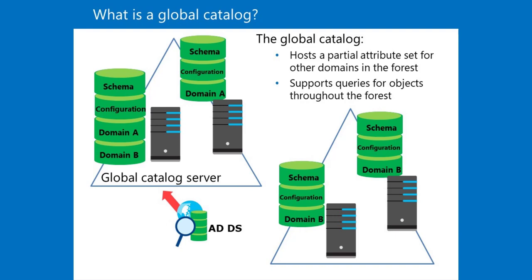When you have multiple sites, you should also make at least one domain controller at each site a global catalog server, so that you are not dependent on other sites when you require global catalog queries. Deciding which domain controllers to configure to hold a copy of the global catalog depends on replication traffic and network bandwidth. Many organizations opt to make every domain controller a global catalog server.